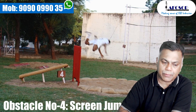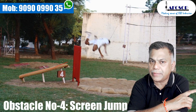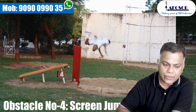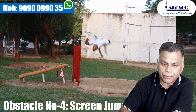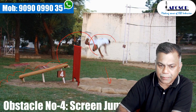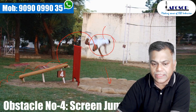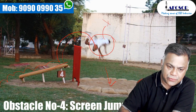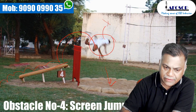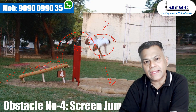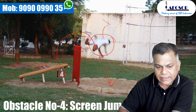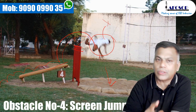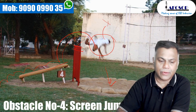Obstacle number four is called screen jump. You have a ramp similar to obstacle one. In front of it there is a screen. You have to come running, then jump over the screen into the sandpit. Make sure you take a clean jump and land in the sandpit — jumping incorrectly means you will fall flat on your face. For girls, the height is slightly lower and adjusted by the groundsman. If your leg touches the screen it will fall down, and marks are only counted if you clear it without touching. Marks for screen jump: four.